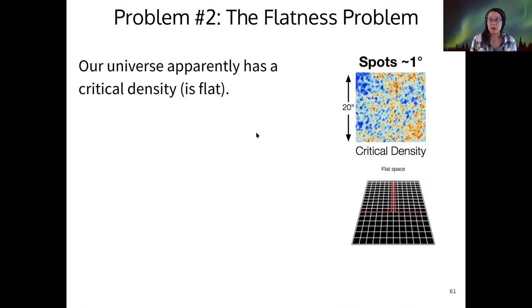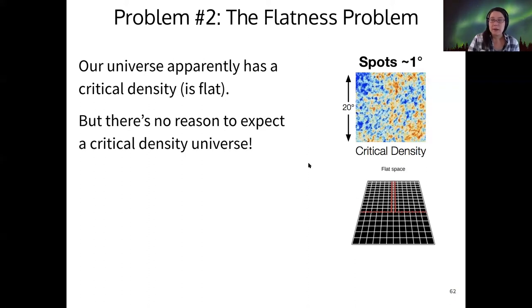The second problem that we have is called the flatness problem. Looking at the CMB, we noticed that the spot sizes that we measure pertain to the density of our universe. When we measure the spot sizes, we find that the universe has a critical density, meaning that space is flat. The geometry of our space-time is flat. This is only a problem because there's no real reason to expect this. The universe could have any density. It doesn't have to have a critical density. So why does it have a critical density?